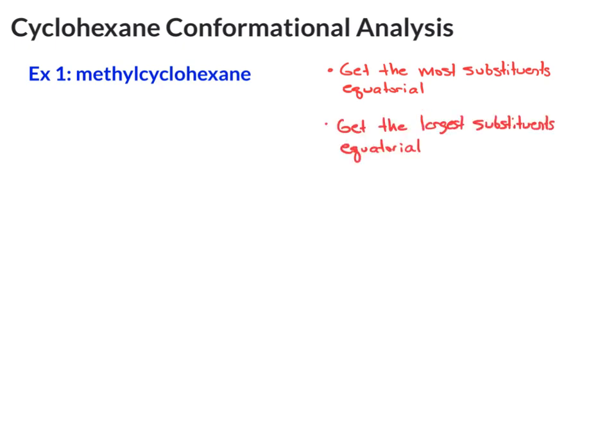We're going to start by working through methylcyclohexane together. This is one you saw on the last slide as well. We have a methyl group on cyclohexane. It doesn't matter if you put it out or back because those are equivalent. Let's start by numbering our ring. This is arbitrary - you can use IUPAC numbering or just any old numbering as a bookkeeping tool. It doesn't have to be IUPAC for this process.